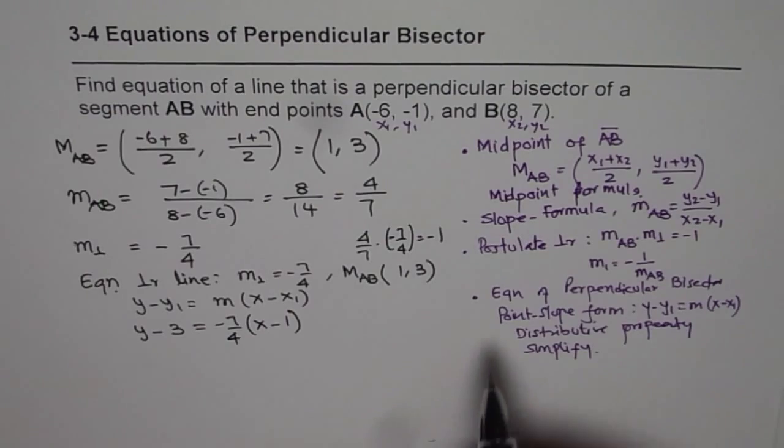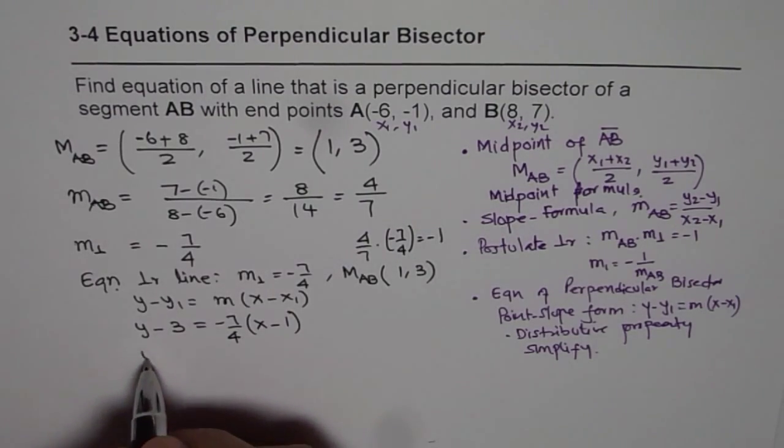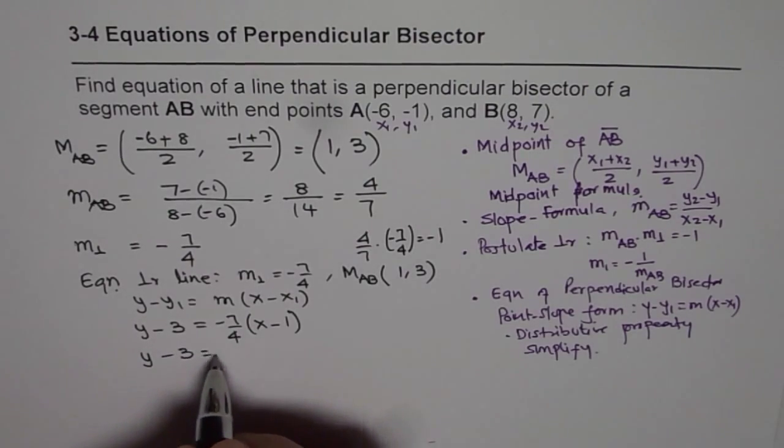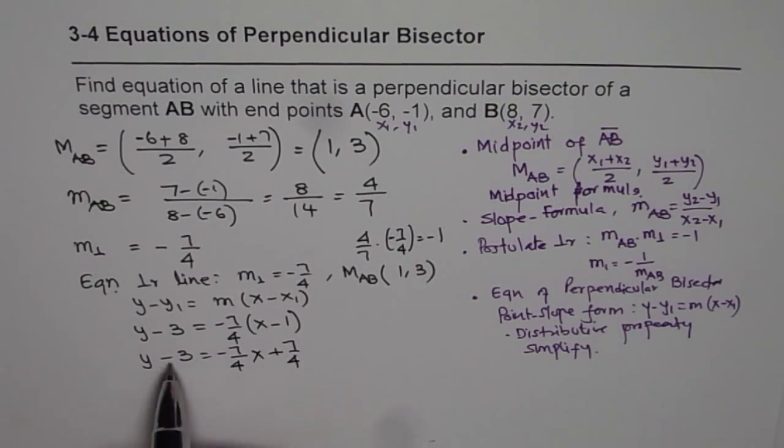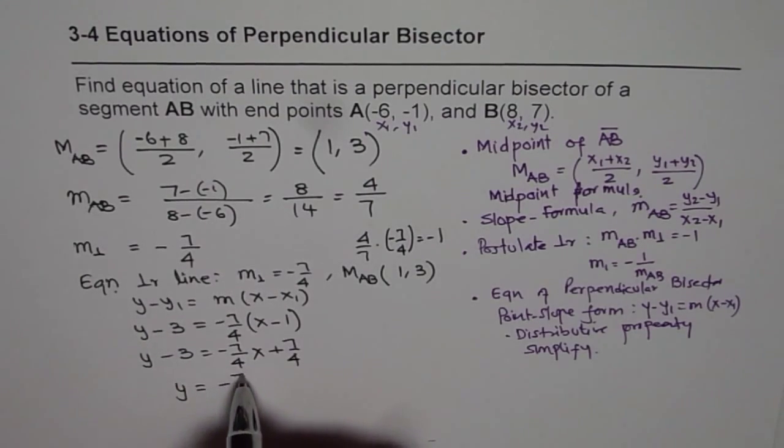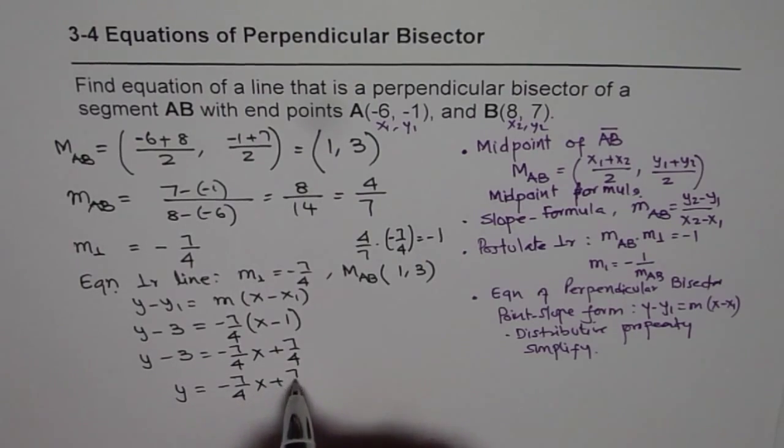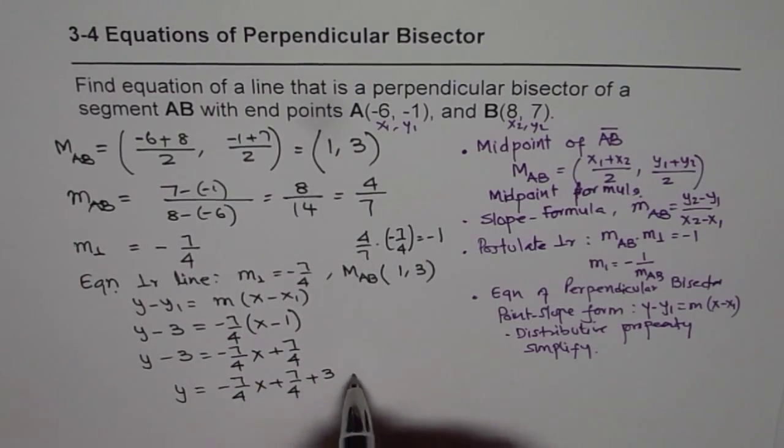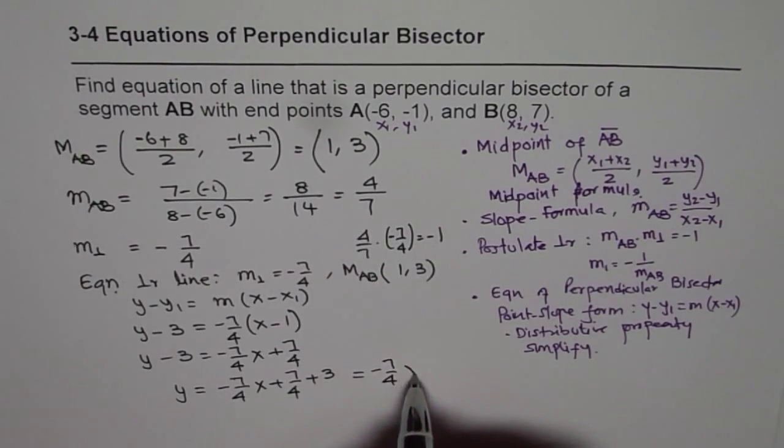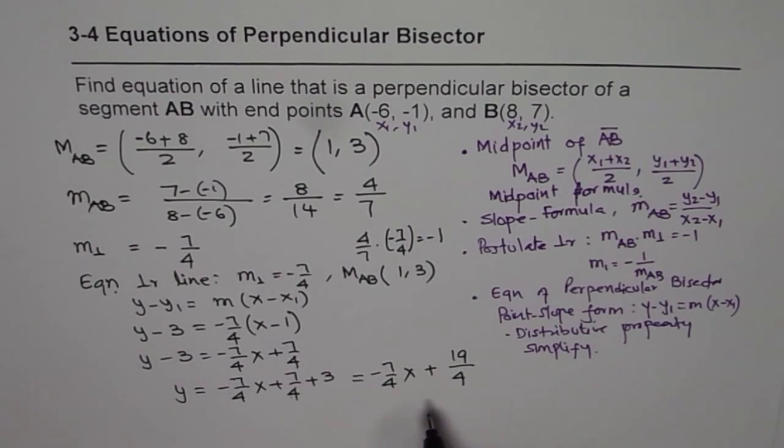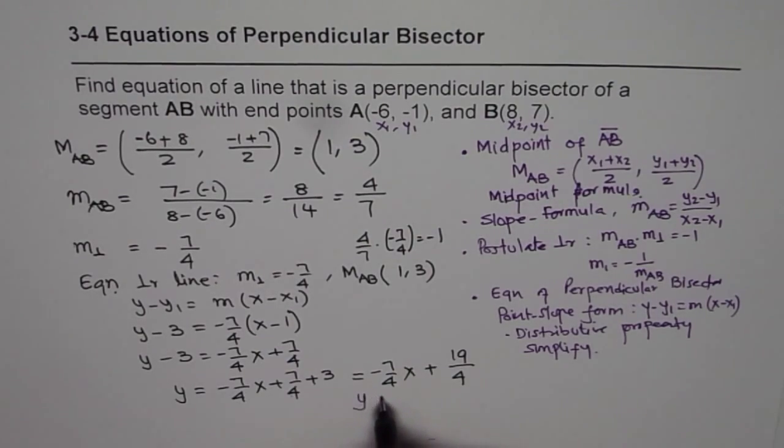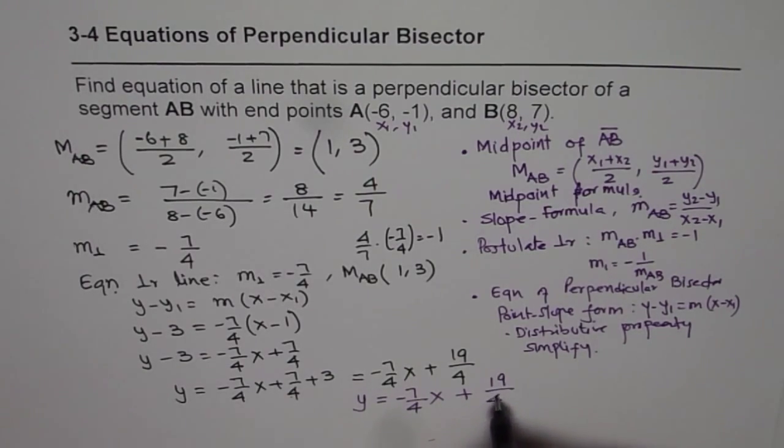And now we will apply the distributed property and simplify, so we have y - 3 = (-7/4)x + 7/4. Now we can add both sides 3 and find y. So y = (-7/4)x + 7/4 + 3. Now this could be simplified, so we have (-7/4)x, and that becomes 12, 12 plus 7 is 19, so plus 19/4. So there we have the equation of perpendicular bisector, and the equation is y = (-7/4)x + 19/4.